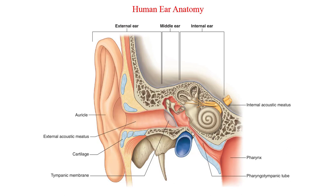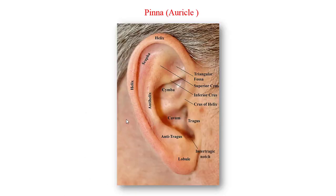Let us start by looking at the structures of the external or outer ear. The outer ear is composed of two basic components: the pinna or auricle and the external acoustic meatus. The pinna or auricle has several important functions, including aiding the localization of sound in space and capturing sound energy.